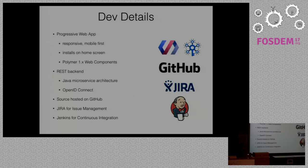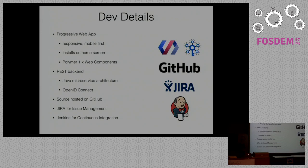Before I show you an example, these are the technical details. It's a progressive web app, responsive and mobile-first developed. It installs on home screen — when you visit it a couple of times, your Chrome browser on Android asks whether you want to install it, and then it feels like a native app, which is really cool. It's developed using Polymer Web Components. The backend is based on Java and a microservice architecture. We're using OpenID Connect with our own provider, but we plan to integrate Google or other big providers as well. It's hosted on GitHub, we use Jira for issue management, and Jenkins for continuous integration and continuous deployment on our build and production environments.